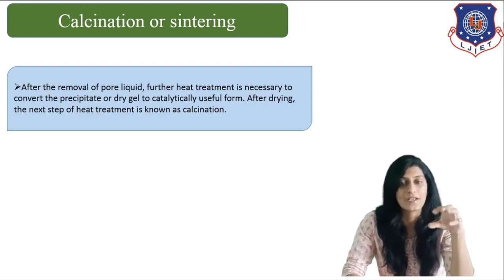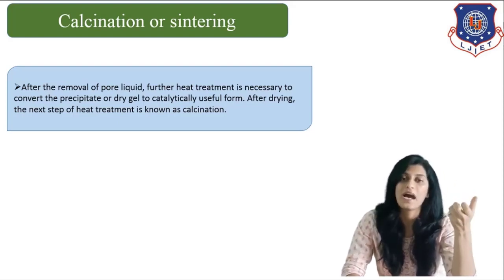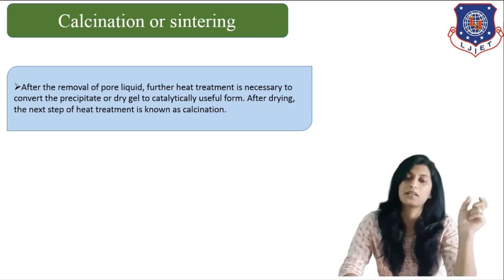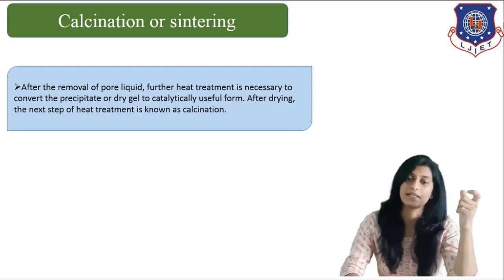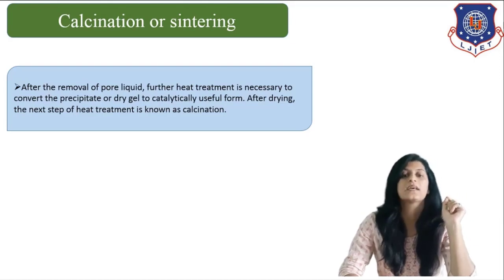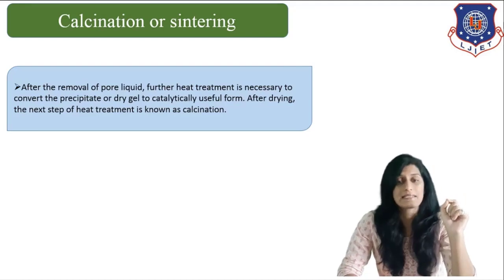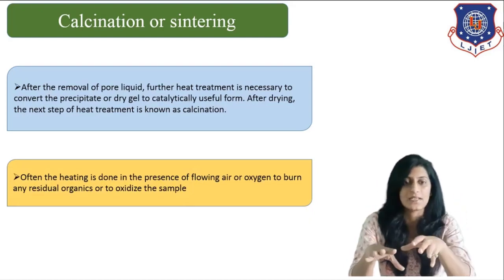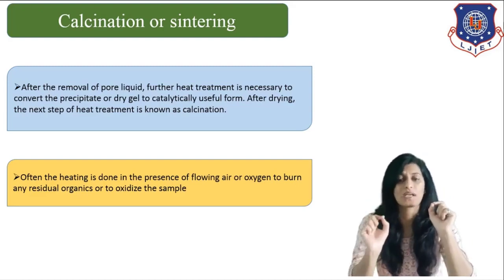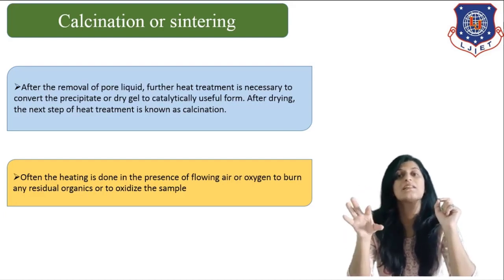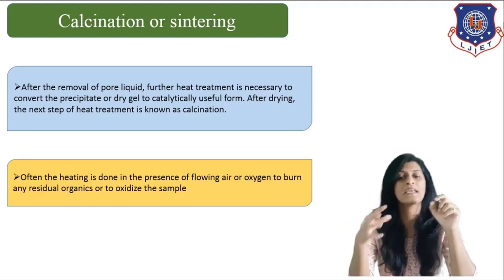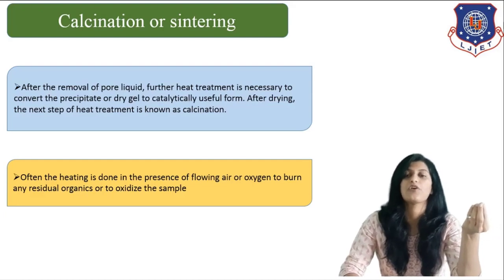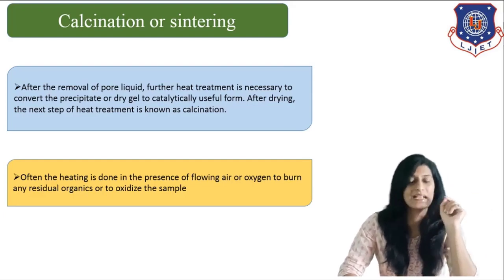This heat treatment is basically necessary to convert the precipitate or dry form of gel to catalytically active forms. After drying, the next and most important step is calcination. The heating is often done in the presence of air or oxygen. This is done to burn any residual organics present in the catalyst, or to oxidize the material or samples which we have formed. This is the purpose of the calcination or sintering step.